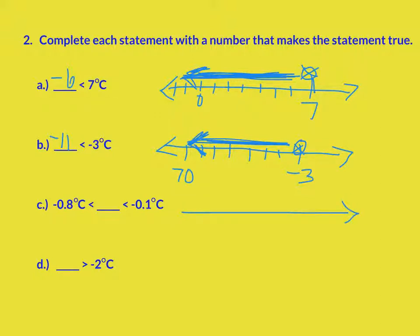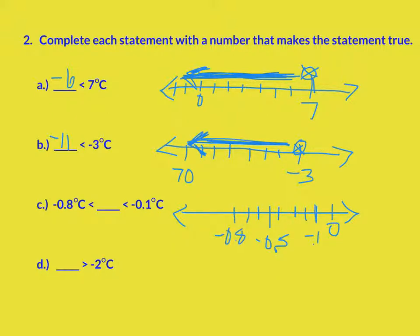The next one is a little different because it's a number that's in between two numbers, and both of these are negative. I'm going to put my 0 here — it looks like I should be counting by tenths. So I'll mark negative 1 tenth, negative 2 tenths, negative 3 tenths, negative 4 tenths, negative 5 tenths, negative 6 tenths, negative 7 tenths, negative 8 tenths. It cannot equal negative 8 tenths and it cannot equal negative 1 tenth — it has to be anything in the middle. I'm going to put negative 5 tenths.